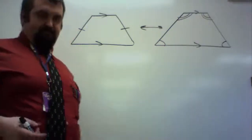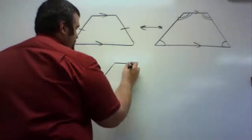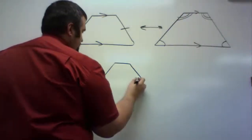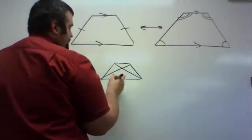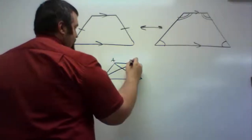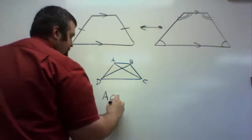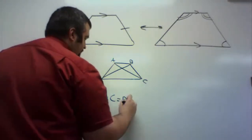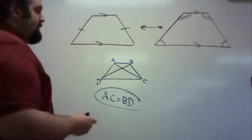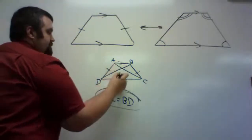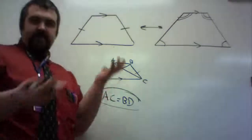Theorem 8.6: if it's an isosceles trapezoid, I know the diagonals have to be congruent — just like a rectangle. Labeling the trapezoid ABCD, the length of segment AC equals the length of segment BD. That's what it means for this to be isosceles. So: if isosceles, base angles are congruent for each pair; if base angles are congruent, it's isosceles; and if it's an isosceles trapezoid, its diagonals are congruent.